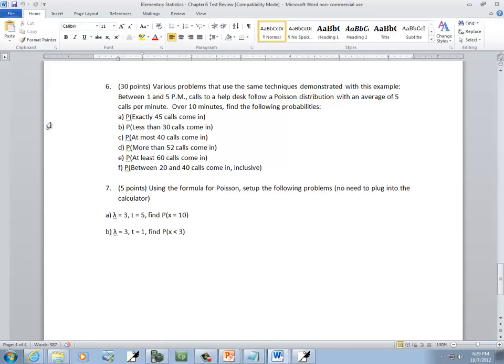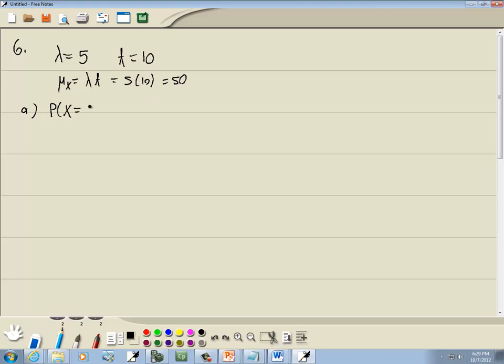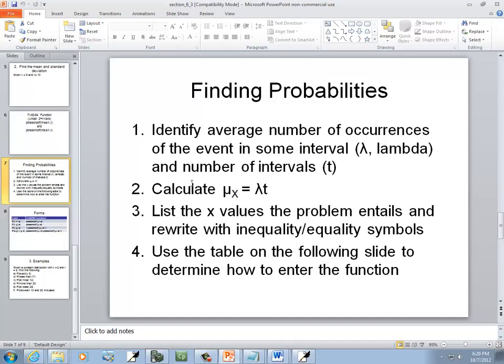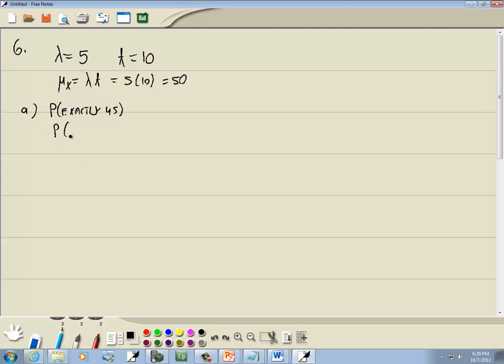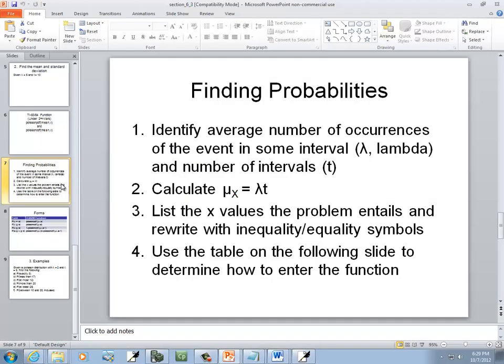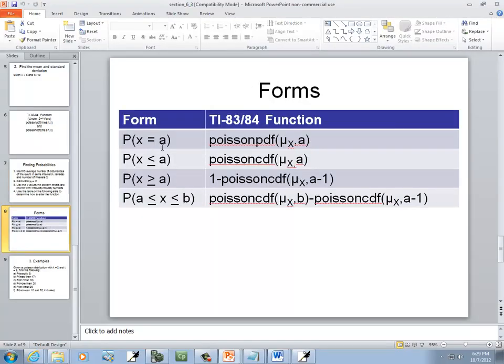Okay, now we can start going through our problems. A, exactly 45 calls come in. So, actually, I meant to write exactly 45 first. So exactly 45. Well, step three says to write the x values the problem entails. Well, this is just x is equal to 45. And this is already an inequality, so it's in perfect form. This is going to be our a, and from our chart, that's the first form, x is equal to a.